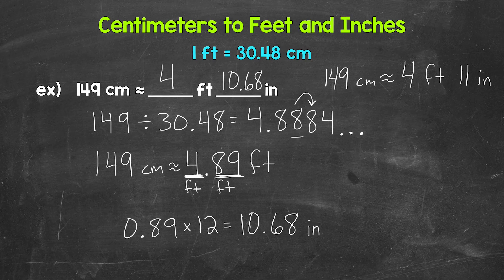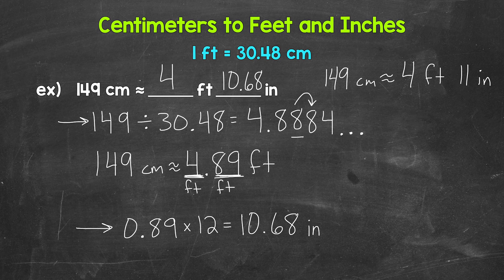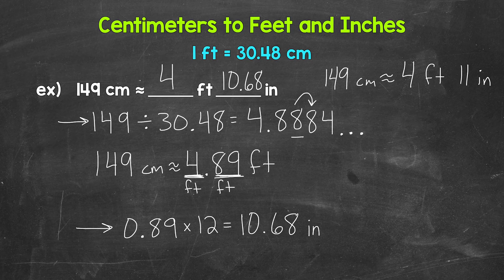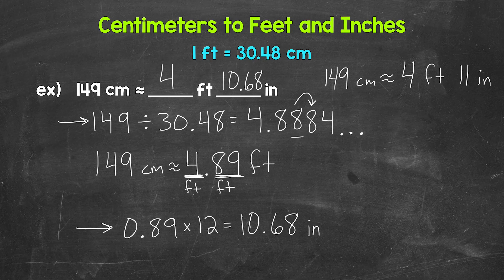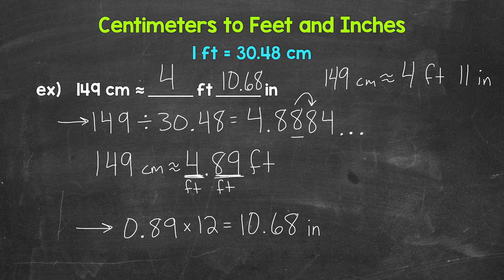So as a recap, we converted centimeters to feet. Then we took the decimal part of that and converted it to inches. So there you have it. There's how to go from centimeters to feet and inches. Convert these centimeters to feet by dividing by 30.48, and then take the decimal part of those feet and convert that to inches by multiplying by 12.